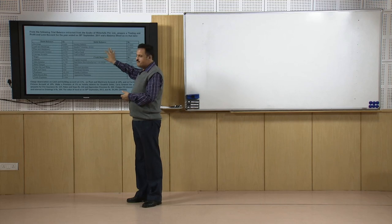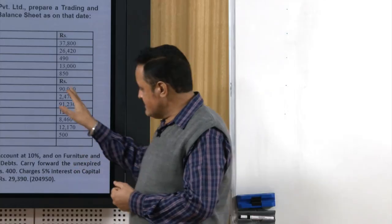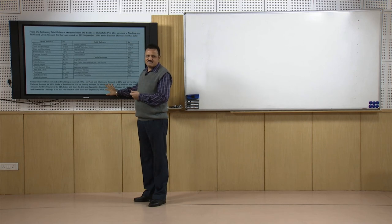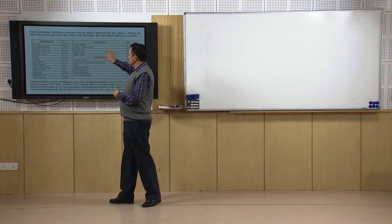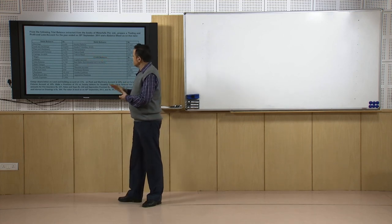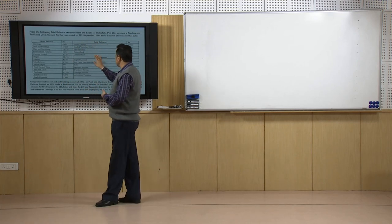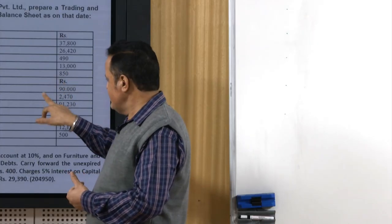If there were no adjustments, the information would end with the table. But after the table, some additional information is also given to us. This additional information is what we call adjustments. The table itself is called the trial balance, which has two kinds of balances — debit balances and credit balances.